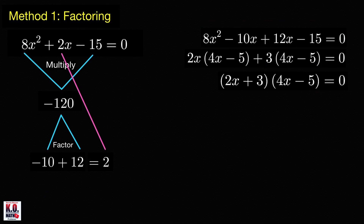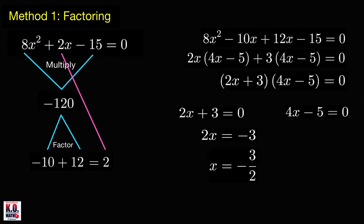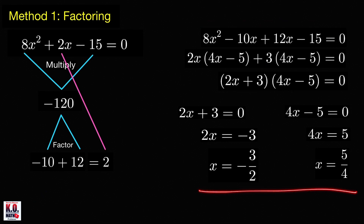Going back to our equation, the product is equal to 0 if one of the factors is equal to 0. So either 2x plus 3 equals 0, or 4x minus 5 equals 0. The first equation gives us 2x equals negative 3, and dividing both sides by 2 we get x equals negative 3 halves. The second equation gives us 4x equals 5, and dividing both sides by 4 we get x equals 5 over 4. So our equation has two real roots: negative 3 halves and 5 over 4.